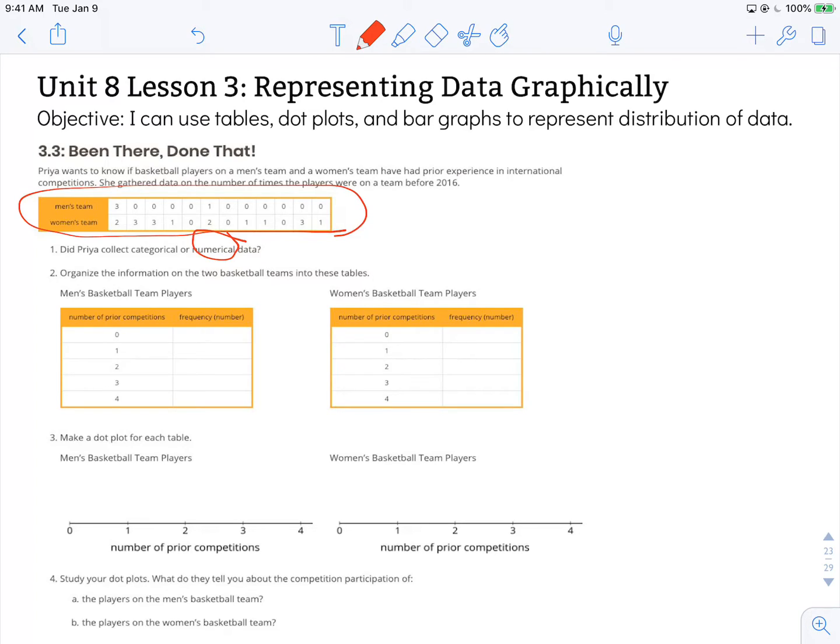The nice thing about a frequency table is you can use tally marks if you want so that you can go and order across your other data from left to right and not have to try to count up how many you see and possibly miscount.